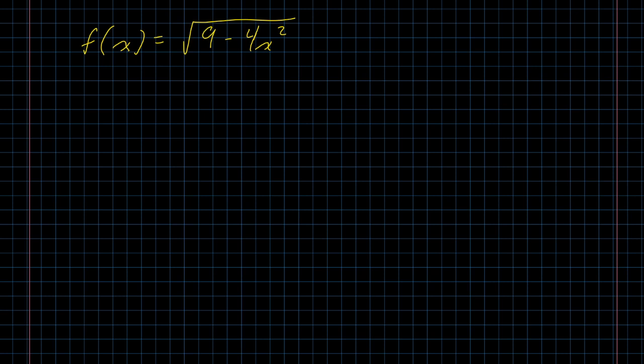Immediately, I hope that you notice—actually to make life a little bit easier on us, let's instead of calling this f of x, let's call it g of x. That way I can talk about f and u as the pieces of this thing. But you should immediately notice that if we let f of x be the square root of x, and u of x be nine minus four x squared, that g of x is f of u of x.